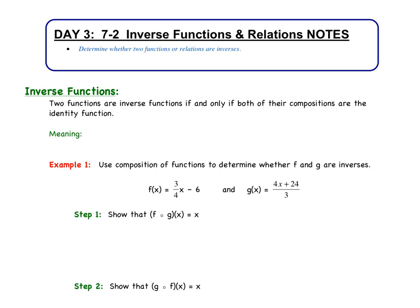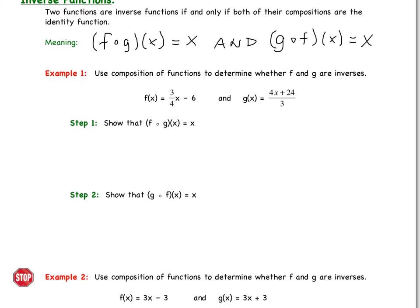Inverse functions. Two functions are inverse functions if and only if their compositions are the identity function. So what does this mean? It means we will need to show that f of g of x equals x, where x is the identity function, and we'll have to show that g of f of x equals x. So we need to show that both of these scenarios equals x in order for the two functions to be inverses of one another.